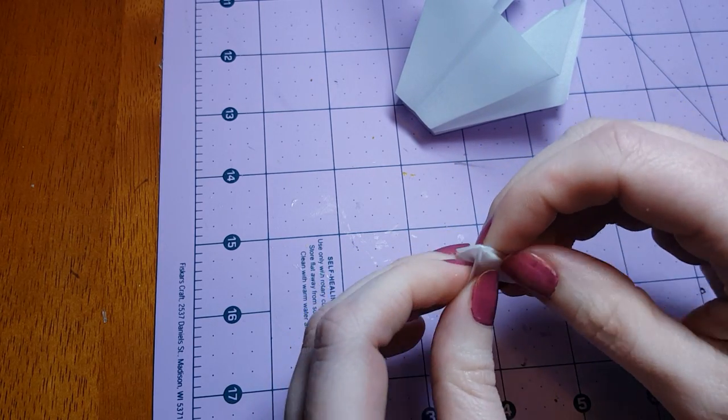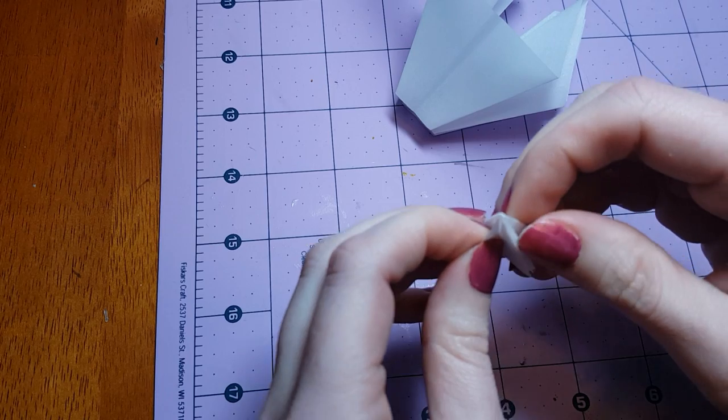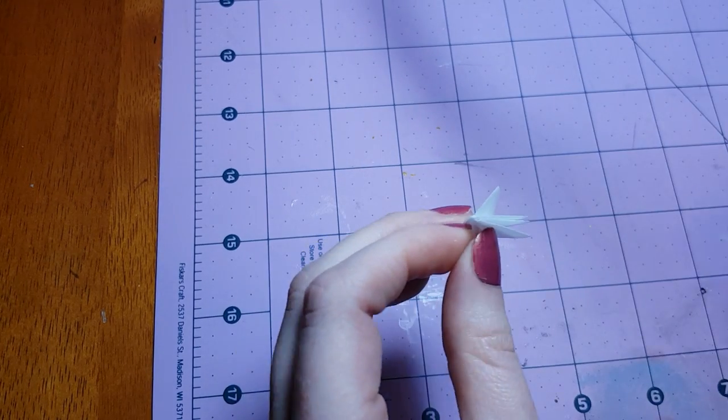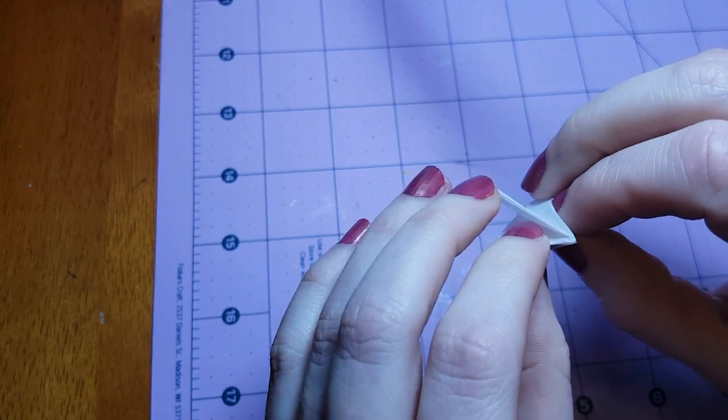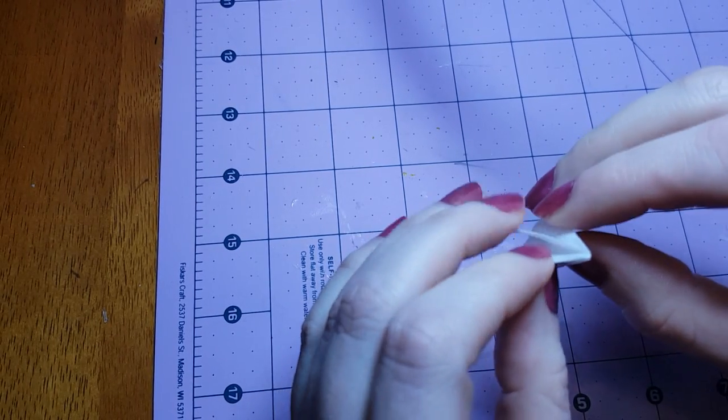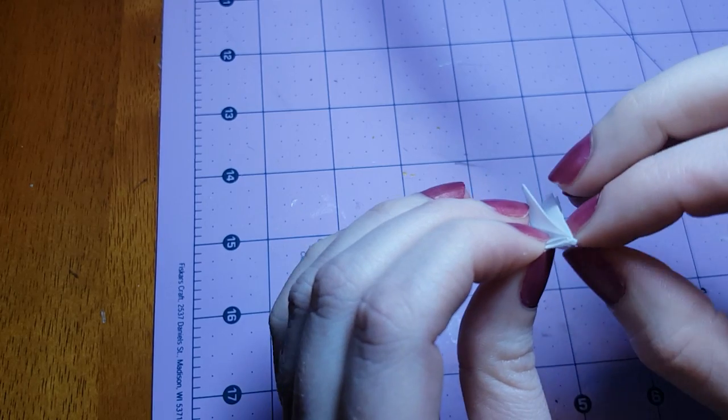You're probably wondering, why didn't we just start with a smaller square then? Well, it's harder to fold it when it's smaller. For me anyway. So here's what we have, and this is going to form the pattern for our muzzle flash effect.